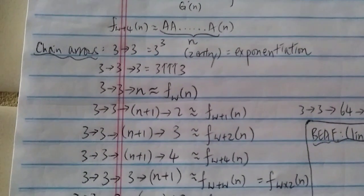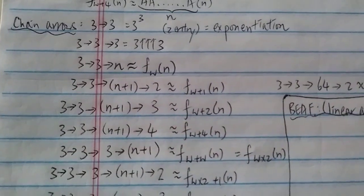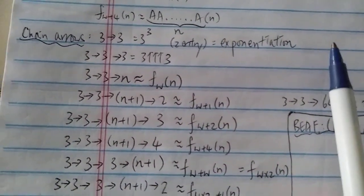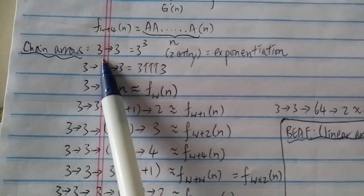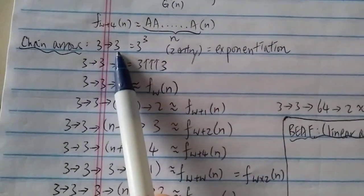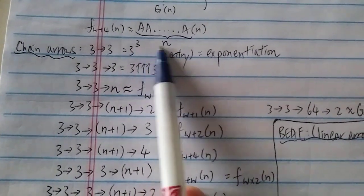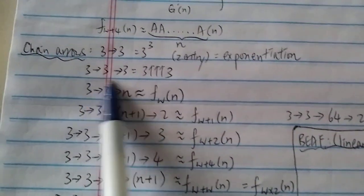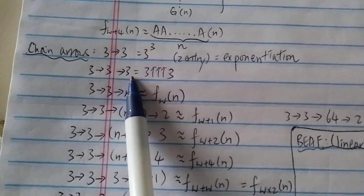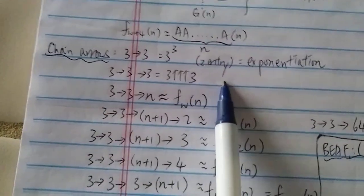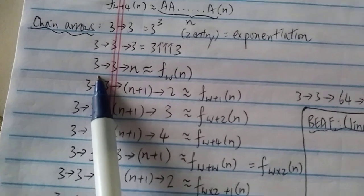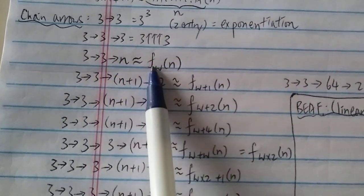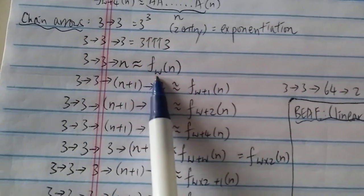What about chain arrows? Chain arrows grow faster than up arrows, so what do they look like in the fast-growing hierarchy? For a 2-entry chain arrow like 3→3, it just means 3 to the power of 3, same as exponentiation. For 3 entries, 3→3→3 means 3 with 3 up arrows 3. So 3→3→n (3-entry) already has growth rate f(ω,n).